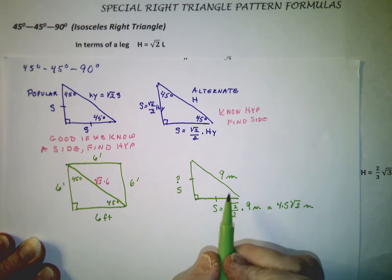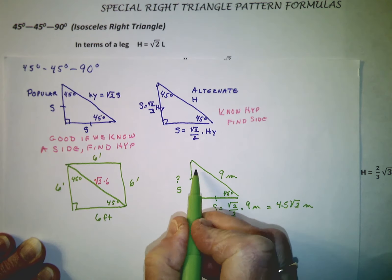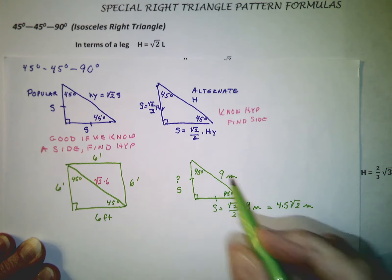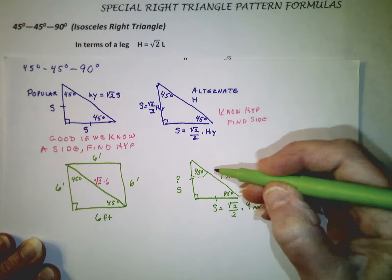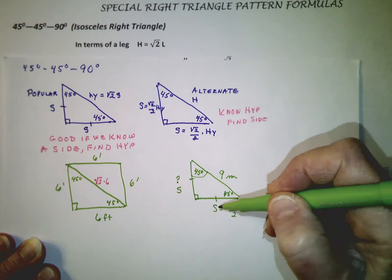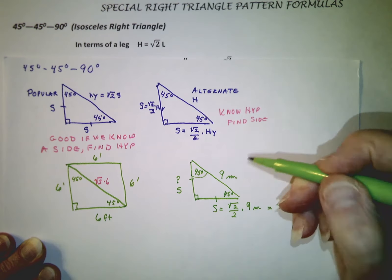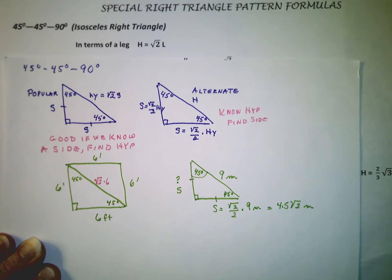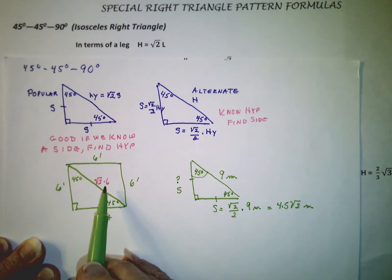We could also have solved it using the 45-degree angle, taking the opposite over the hypotenuse and using sine of 45 degrees. Both approaches work — this shortcut was quite quick, and the other wasn't bad either.